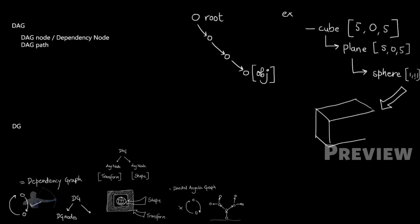If this is the world space, your cube is here, which is the parent of plane, your plane is here, and the sphere is here. Maya needs a complete DAG path to determine this location of this sphere.